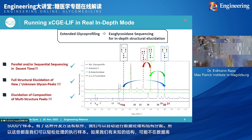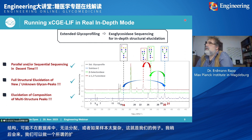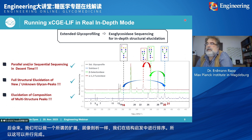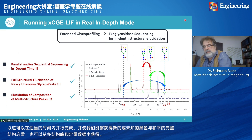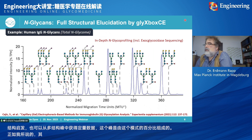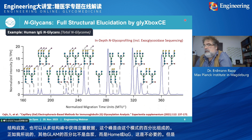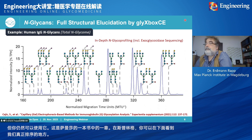If the sample is too complex, we can do so-called extended glycoprofiling, where we perform exoglycosidase sequencing for in-depth structural elucidation. This can be done in parallel in a decent time and enables us to get the full structural elucidation of new or unknown glycan peaks, or multi-structure peaks, and also quantitative data — what percentage of a peak is composed by one glycan versus another. This is published in a book chapter by Samantha at Springer, where we sequence down all the glycans of IgG.